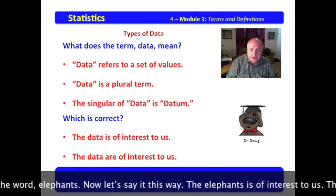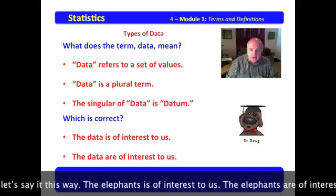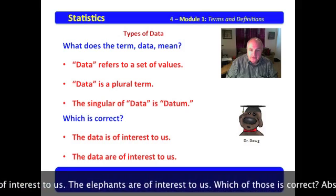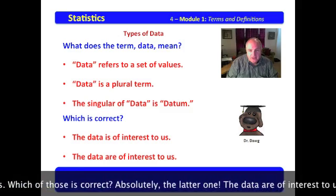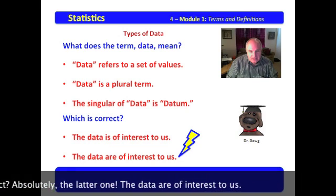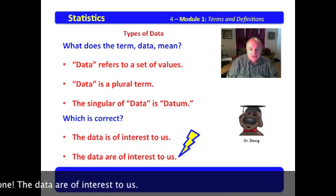Let's use the word elephants. Now, let's say it this way. The elephants is of interest to us. The elephants are of interest to us. Which of those is correct? Absolutely, the latter one. The data are of interest to us.